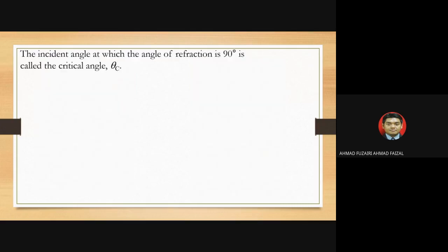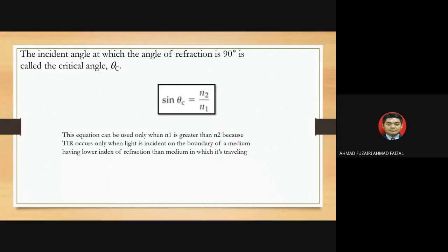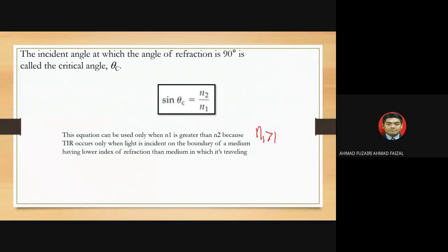The critical angle occurs when the angle of refraction is 90 degrees. To calculate the critical angle, use: sine theta c = n2/n1. This equation can only be used when n1 is greater than n2, because total internal reflection only occurs when light travels from a higher index medium to a lower index medium. If n1 were less than n2, sine theta c would be greater than one, which is mathematically impossible.